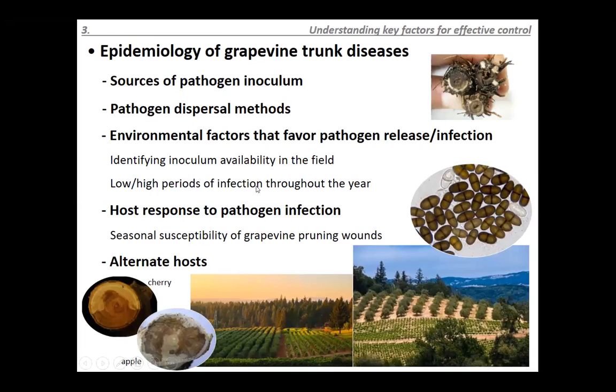Host response to the pathogen is very important — specifically the seasonal susceptibility of grapevine pruning wounds. This is also why these diseases are so complex and difficult to control: there are many alternate hosts on which these fungi can cause similar symptoms, such as cankers on cherry and apple trees. Eutypa lata, for example, has over 80 different hosts — woody perennials and native plants — that can all be sources of inoculum.